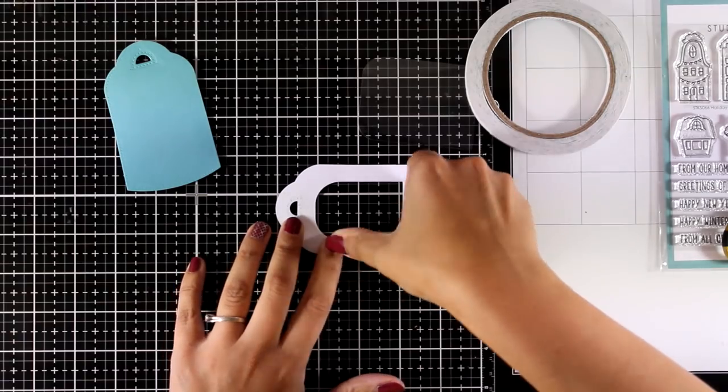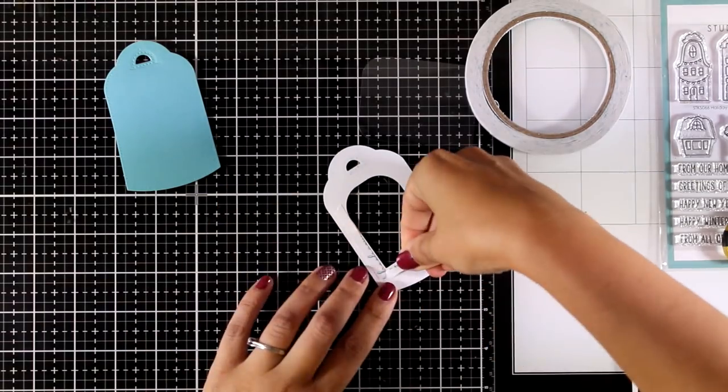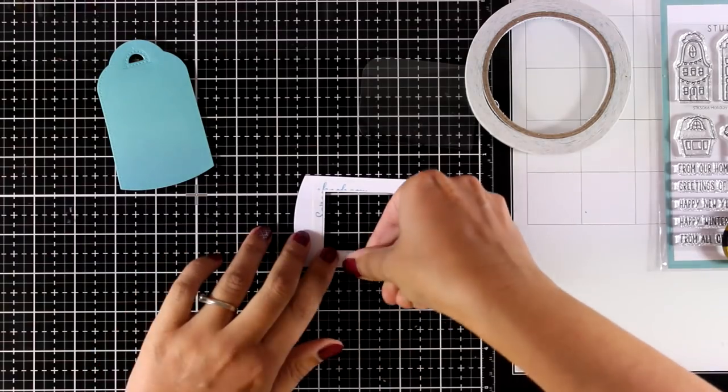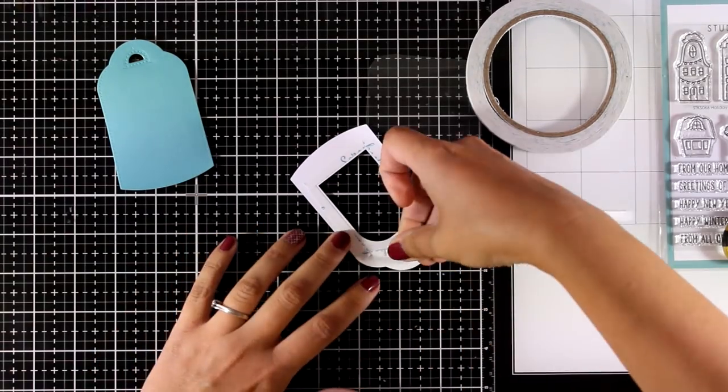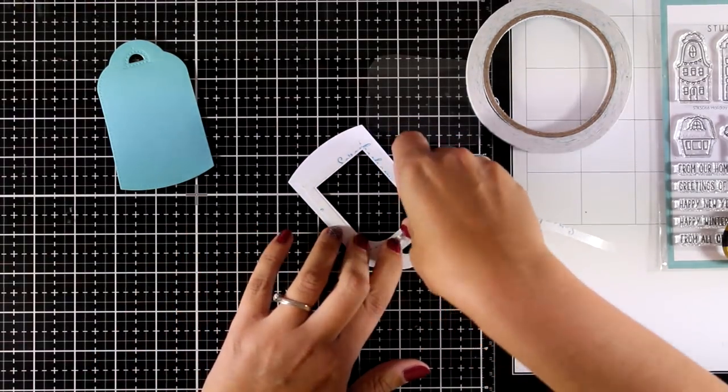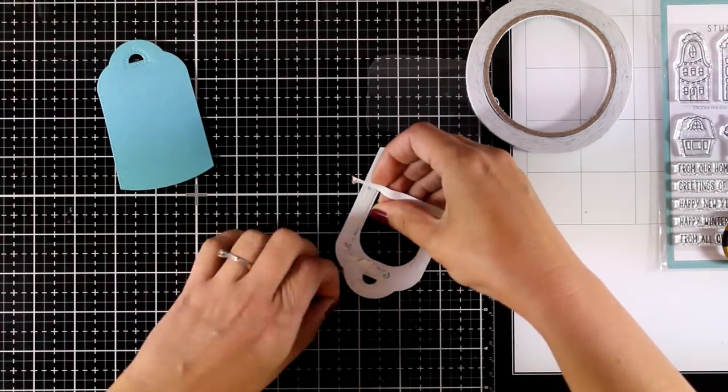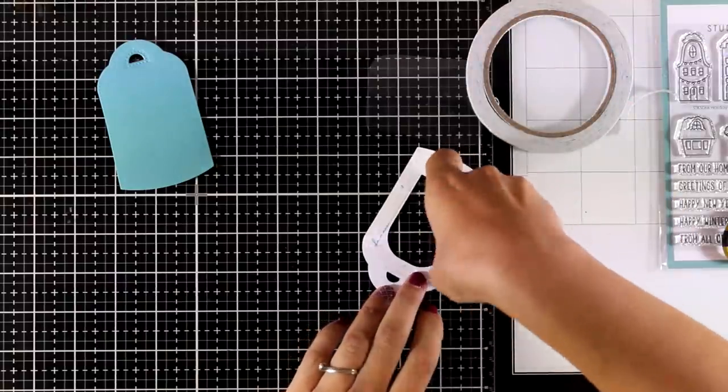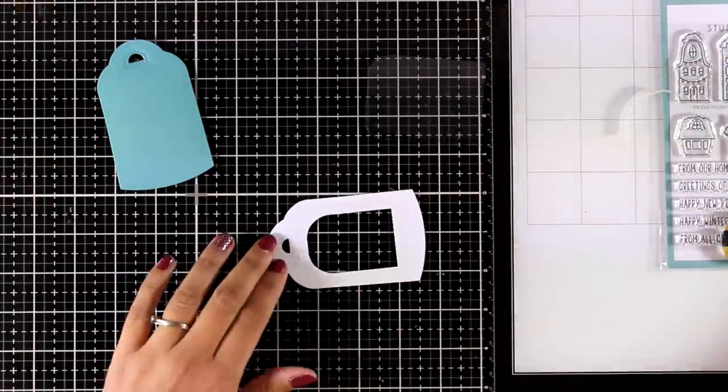This is going to be the top part of my shaker tag, so at the back I'm going to add some double-sided tape all around that window and then I'm going to peel it off and stick there my acetate. Now this die is very versatile because you can use it all year round to create gift tags and you don't really need to make shaker cards.